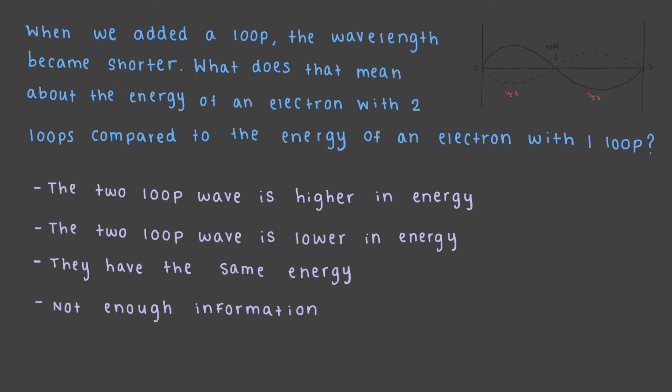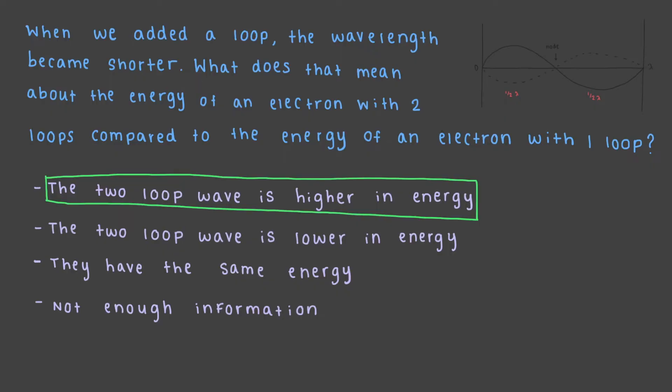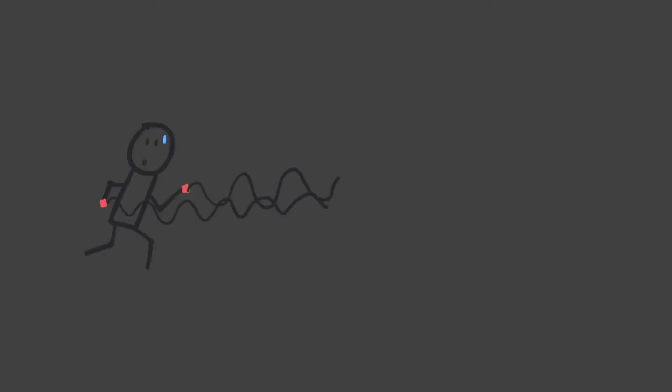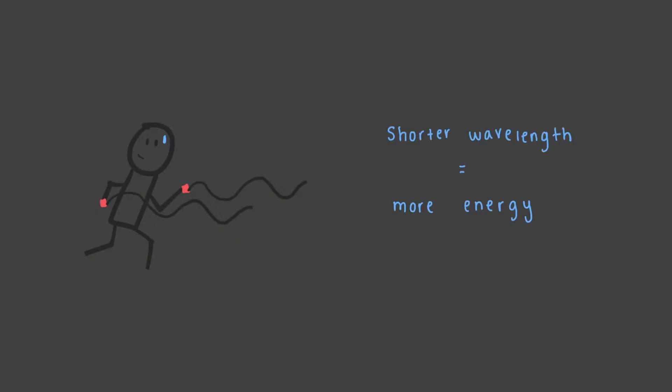When we have more loops, we have more energy. Think about the relationship between frequency and wavelength of light waves: because the wavelength decreases as we add loops, the frequency and energy increases. You can also think about battle ropes in the gym — it is much harder to make waves with more loops versus fewer loops. It requires more energy.